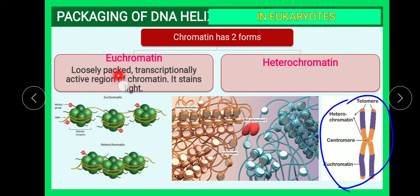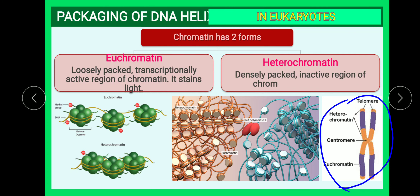Euchromatin is loosely packed and transcriptionally active, so it stains light. Heterochromatin is densely packed and transcriptionally inactive, so it stains dark. In summary: heterochromatin is dark and inactive; euchromatin is light and active. Both forms are observed within the chromosome.